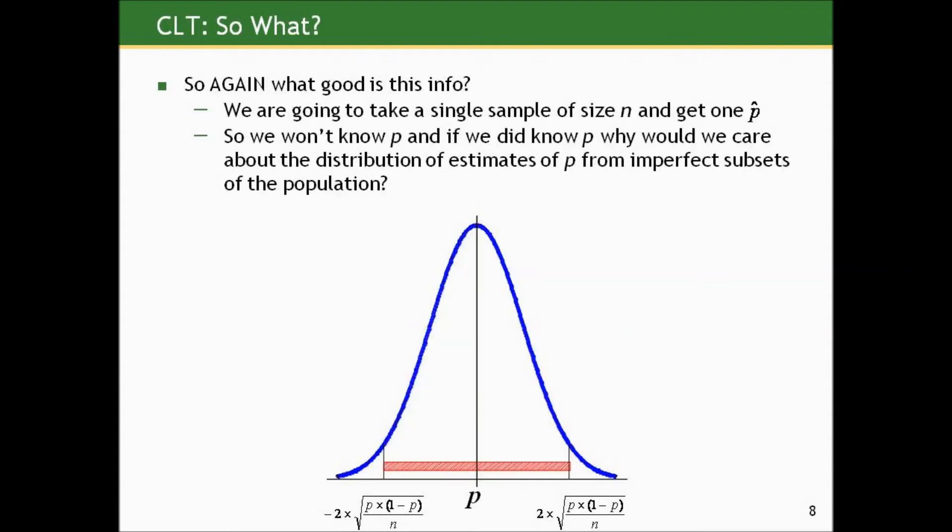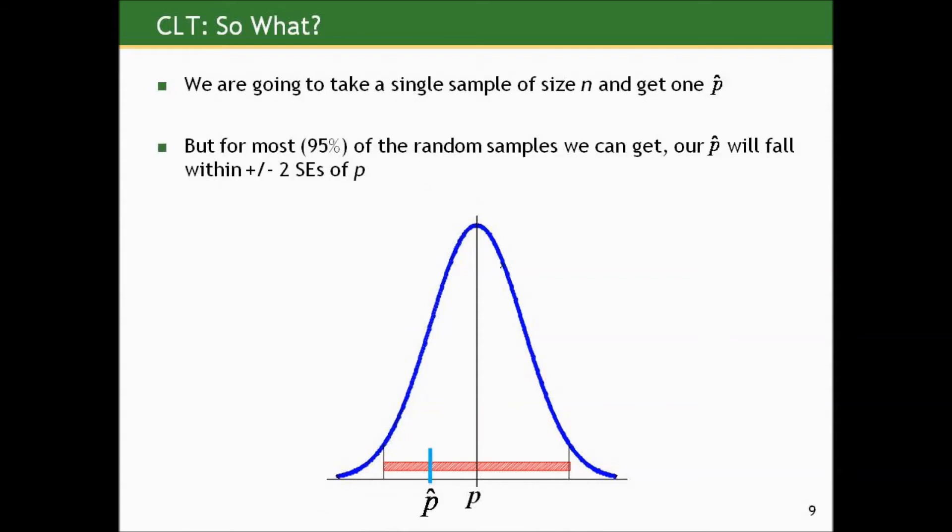So again, we're only going to take one sample ever, sample size n, and we're going to get one sample proportion, one p hat. So we're not going to know p. And of course, if we did know p, why would we care about p hat? But we are going to take a single sample size n and get one p hat. But for most of the single samples we can get, our p hat will fall within plus or minus two standard errors of p. And by most, I mean 95%.